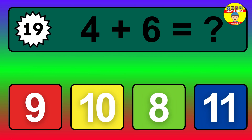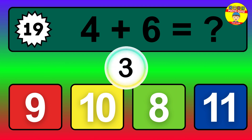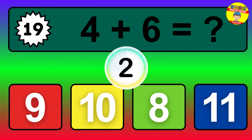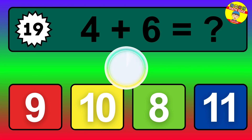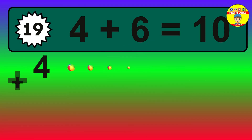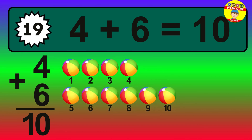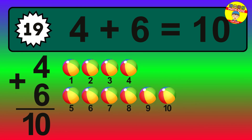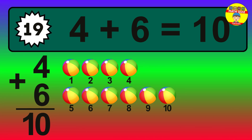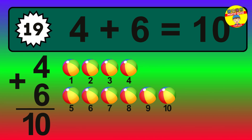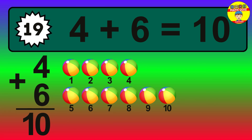Question 19. 4 plus 6 equals what? The answer is 4 plus 6 is 10. Let's count it: 1, 2, 3, 4, 5, 6, 7, 8, 9, 10.